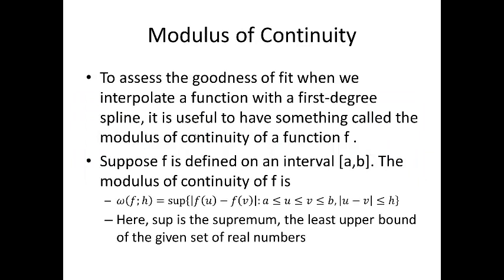To assess the goodness of fit when we interpolate a function with the first degree spline, it is useful to have something called the modulus of continuity of a function f. Now, suppose f is defined on the interval [a,b]. The modulus of continuity of f is ω(f; h), which is the supremum of |f(u) - f(v)|, where u and v lie between a and b, and u is less than v, and the absolute value of u minus v is less than h. Now, the supremum is the least upper bound of a given set of real numbers. And, the quantity ω(f,h) measures how much f can change over a small interval of width h. If f is continuous on [a,b], then it is uniformly continuous, and ω(f,h) will tend to 0 as h tends to 0. If f is not continuous, ω(f,h) will not tend towards 0.